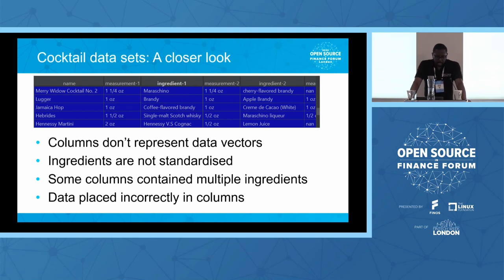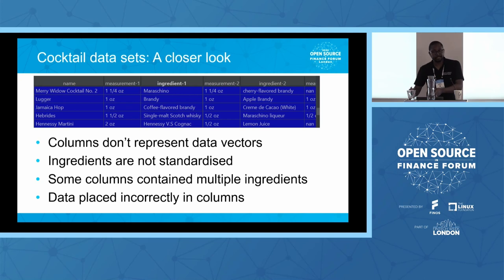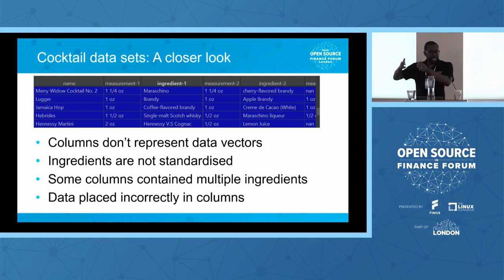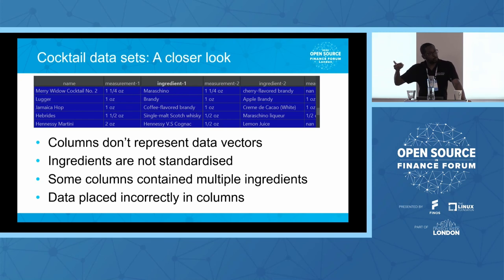Another thing to note is that the ingredients themselves aren't standardized. Some are brands — Hennessy, Jägermeister — while others are generic, like coffee flavored brandy or apple brandy. We have to take those very different representations and convert them into a standardized column, so you have things like rum with the volume of liquid associated with the cocktail.